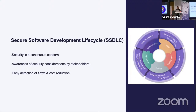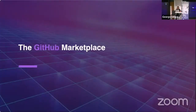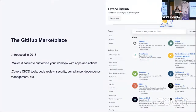The good news is you can implement guardrails within GitHub using different applications and actions, whether it's for a pet project you want to demonstrate or if you're a maintainer of an open source project. I'll demonstrate this using the GitHub Marketplace, though this is also available in GitLab and other platforms. The GitHub Marketplace was introduced at GitHub Universe in 2016. It's a place where developers can find integrations and implement them into their workflows, covering CI/CD tools, code review, security, compliance, dependency management, and more.